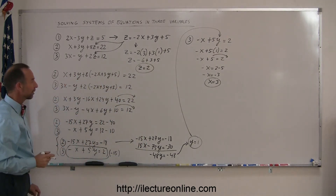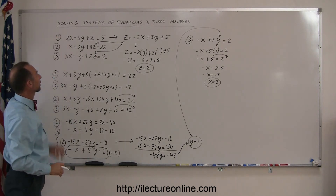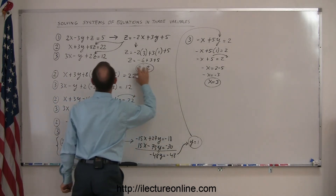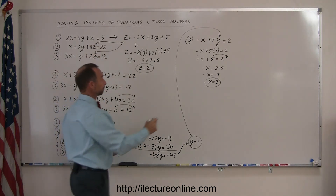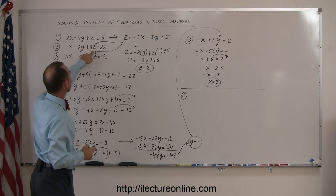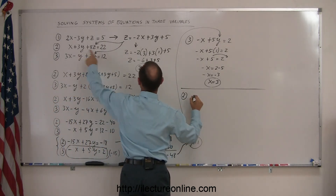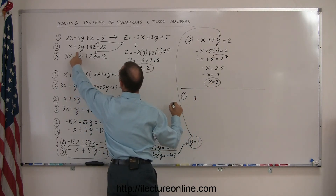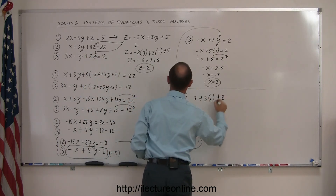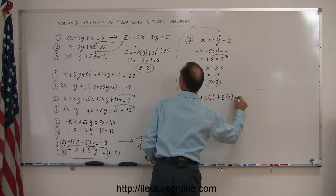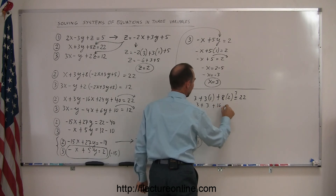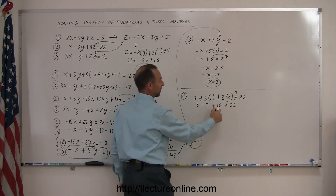So I have found the values for x, y, and z that satisfy all three equations. Just to make sure I did it correctly, I'll plug the values back into equations 2 and 3. Taking equation number 2 and replacing every x by 3, every y by 1, and every z by 2: 3 plus 3 times 1 plus 8 times 2 should equal 22. And indeed, 3 plus 3 plus 16 equals 22. So far so good.